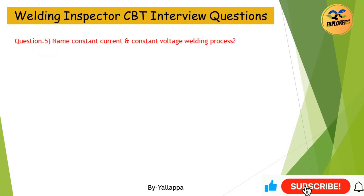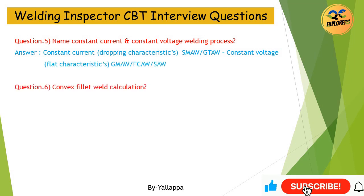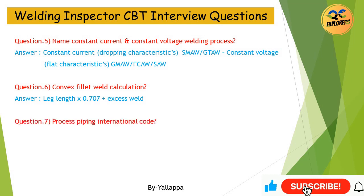Question 5: Name Constant Current and Constant Voltage welding processes. Answer: Constant Current — SMAW, GTAW. Constant Voltage — GMAW, FCAW, SAW. Question 6: Convex Fillet Weld Calculation? Answer: Leg Length × 0.707 plus Excess Weld.